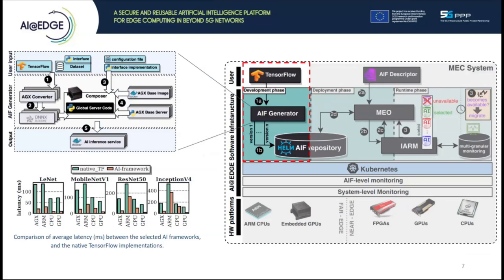Additionally, TF2i uses platform-optimized AI frameworks in order to improve performance compared to the native widely-used TensorFlow models. As shown at the bottom left, thanks to these optimizations, most of the model and platform combinations experience marginal improvement in latency.